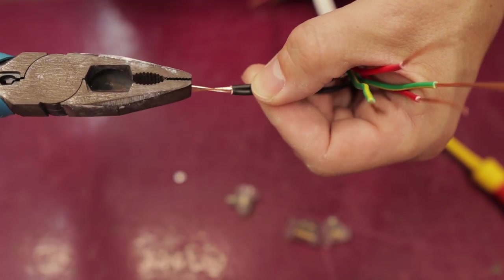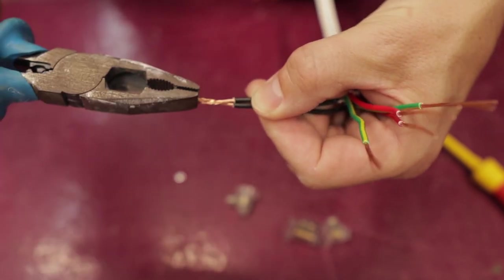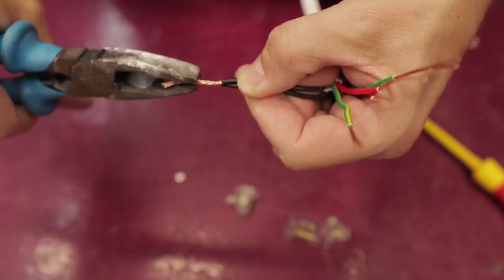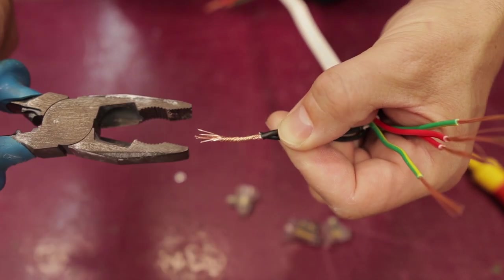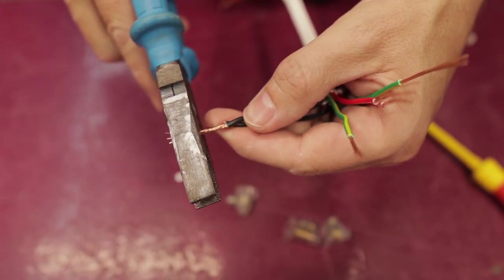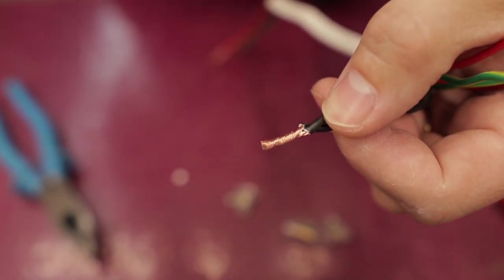Now I take my pliers and then I twist it like that. What should happen is it should come together like a nice piece of rope, and then I can nip off the end. Give it another twist there. There we go.